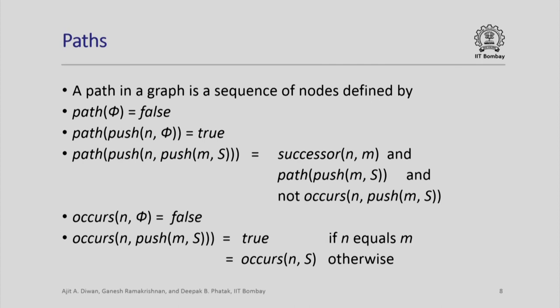A path is a similar thing — a sequence of nodes defined in a very similar way. It is false for the empty sequence; for a sequence containing a single node n it is true. Apart from the condition in a walk that m is a successor of n, the remaining sequence must be a path itself, and we have the extra condition that occurs(n, remaining sequence) must be false — that is, the first node in the sequence must not occur anywhere else in the sequence. Essentially, a path is a sequence of distinct nodes; we do not come to the same node again.